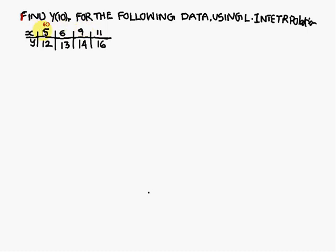If you consider the x variables here: 5, 6, 9, 11 — the difference between the first two is 1, the difference between 6 and 9 is 3, and the difference between 9 and 11 is 2. So the intervals are unequal: 1, 3, 2. When you come across unequal intervals, you use Lagrange's interpolation.